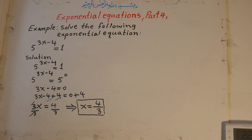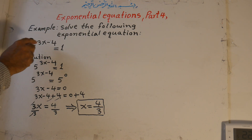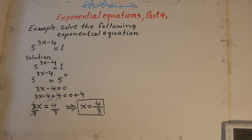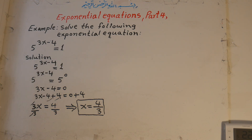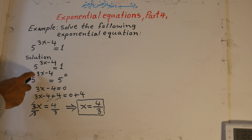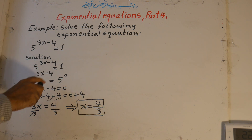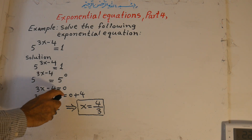To recap: exponential equations, part 4. Example — solve the following exponential equation: 5 to the power of 3x minus 4 is equal to 1. We make both bases equal to each other. The left side is 5 to the power of 3x minus 4, and the right side, 1, is written as 5 to the power of 0. Because both bases are the same, we set the exponents equal to each other.